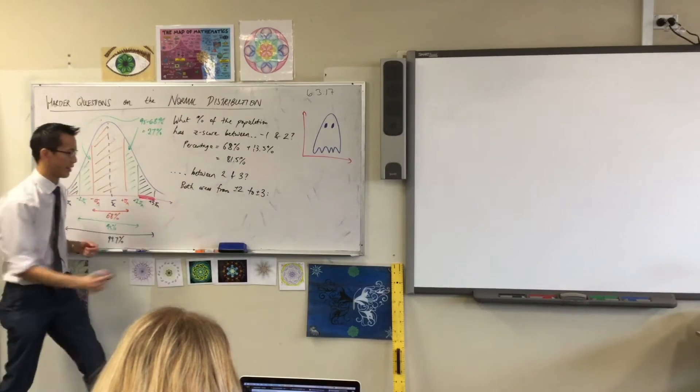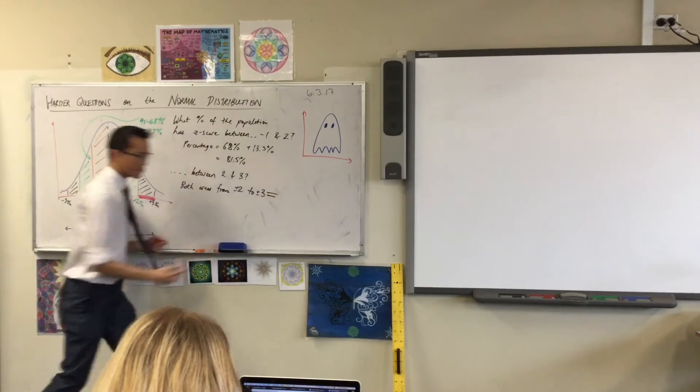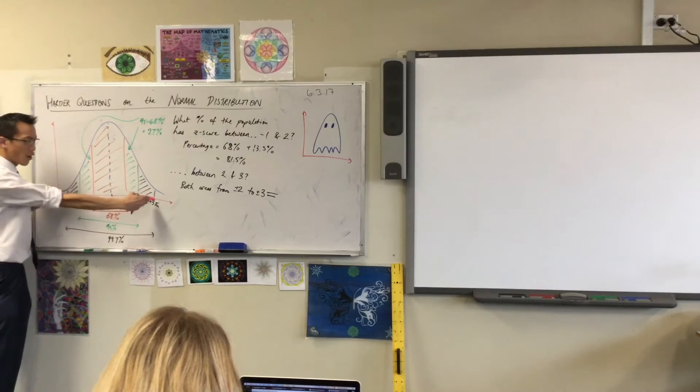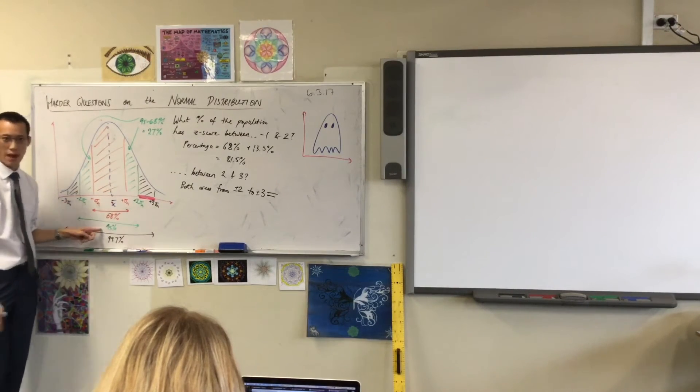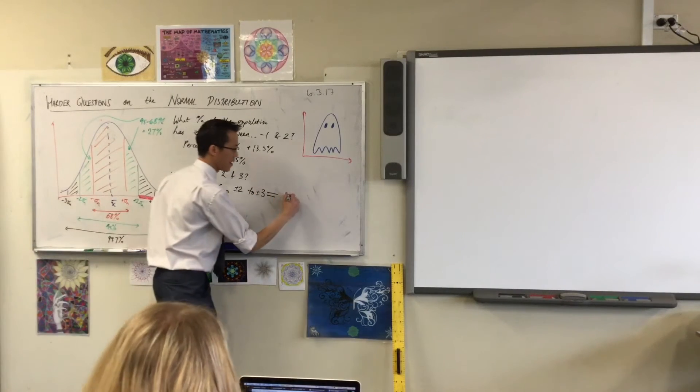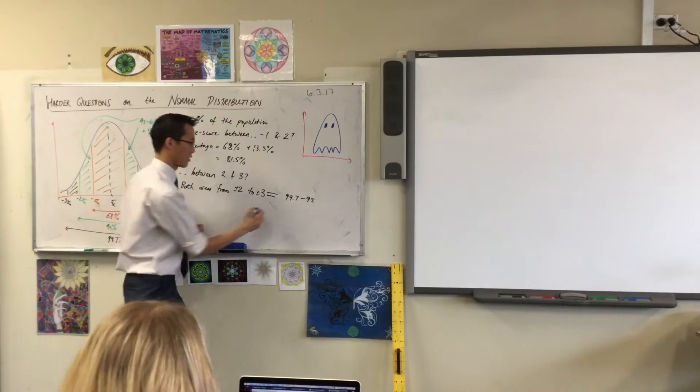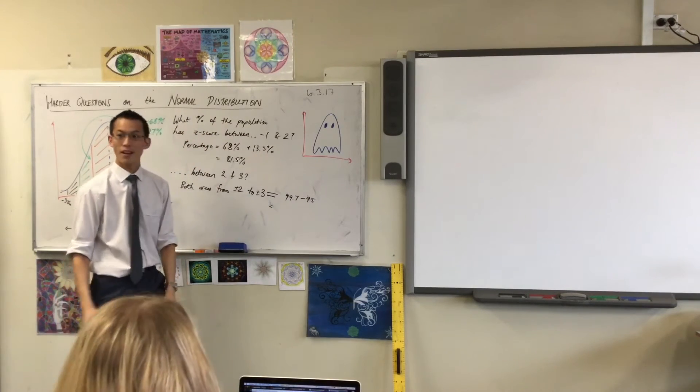Okay, that's what I'm about to calculate. So the widest I can go is 99.7, but if I go in one step, that's 95. So 99.7 take away 95, what does that give you? 4.7.